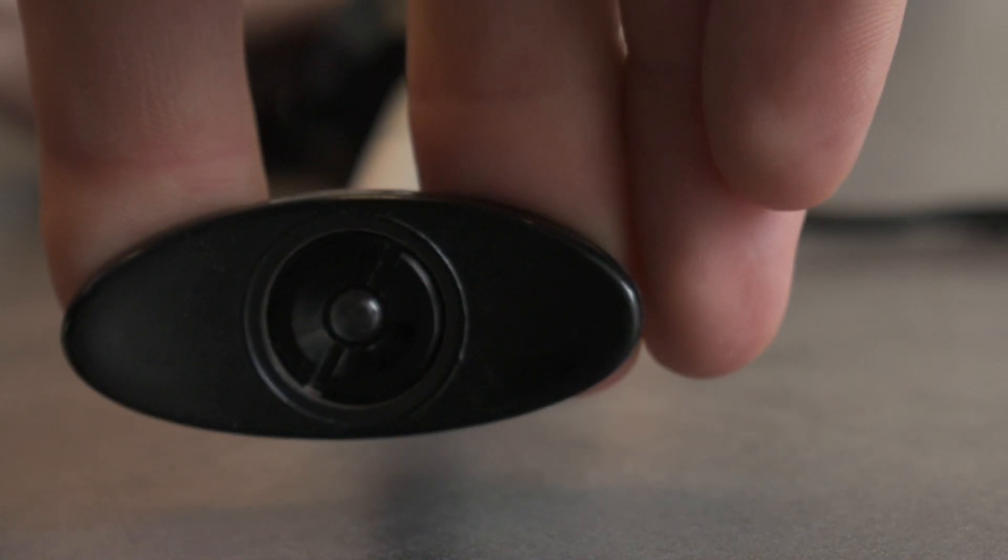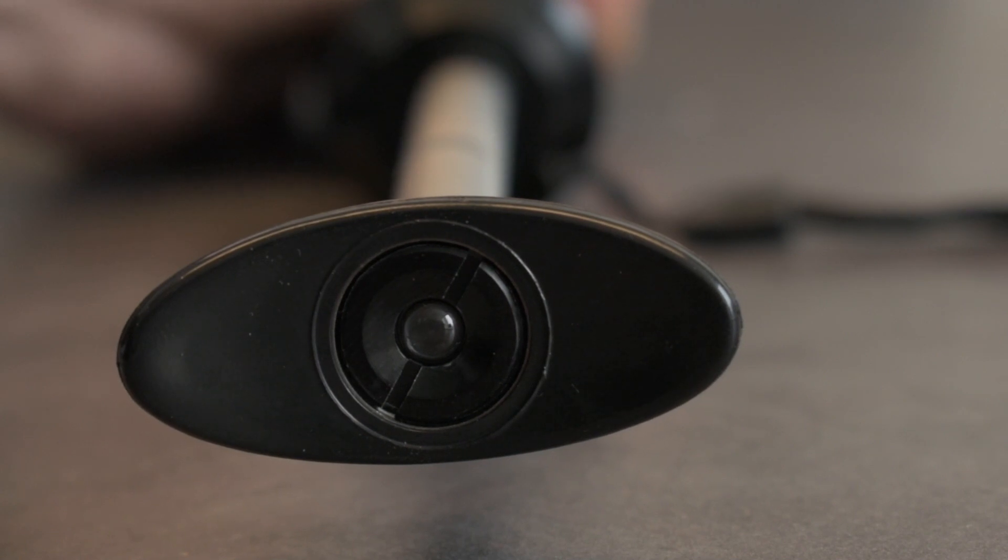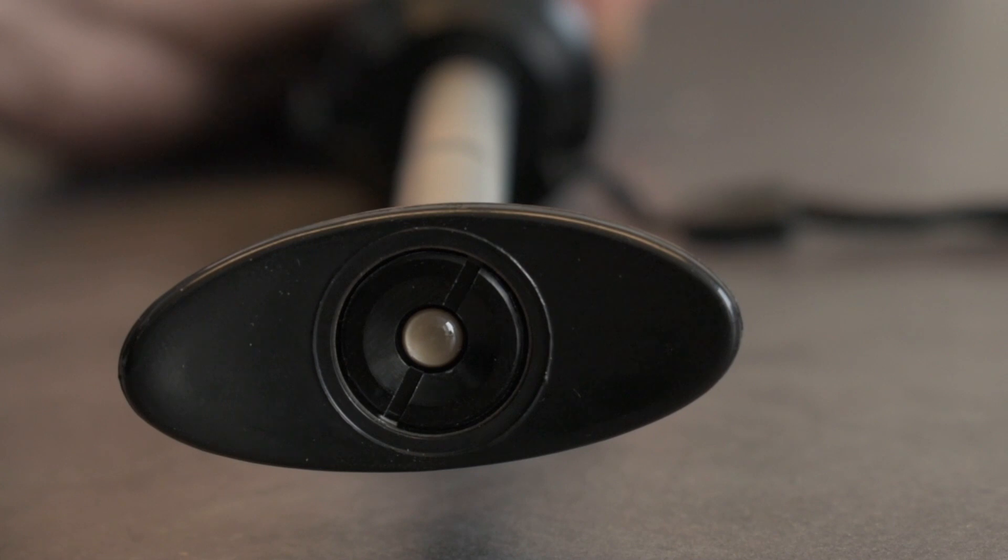With the handle fully extended, your sample time begins. To determine if your sample is complete, look at the bottom of the pump handle. If it's clear, the sample is still in progress. If it's white, then the sample is complete.